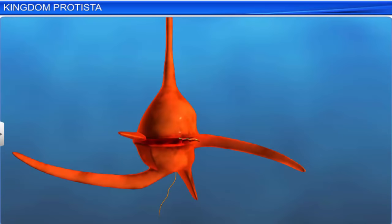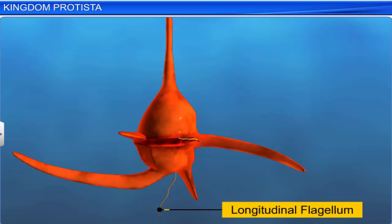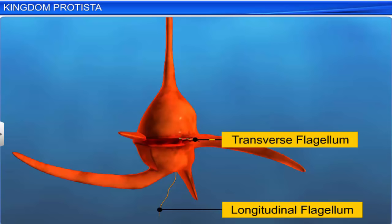Dinoflagellates usually have two flagella: longitudinal flagella and transverse flagella. Their names indicate how both the flagella are positioned.